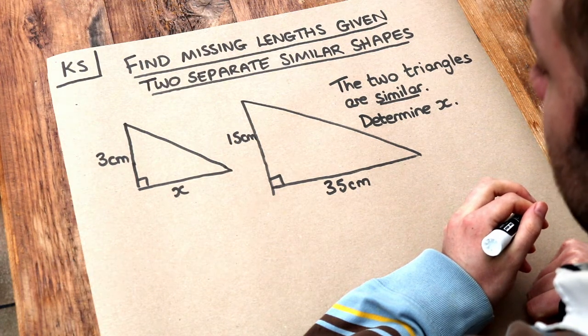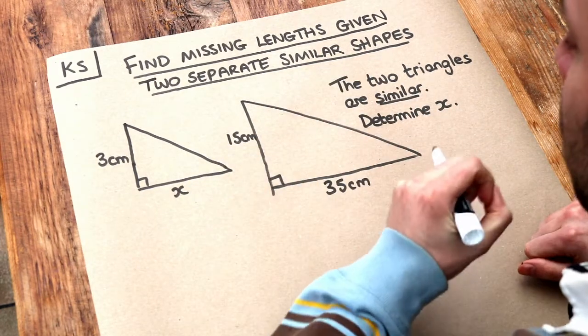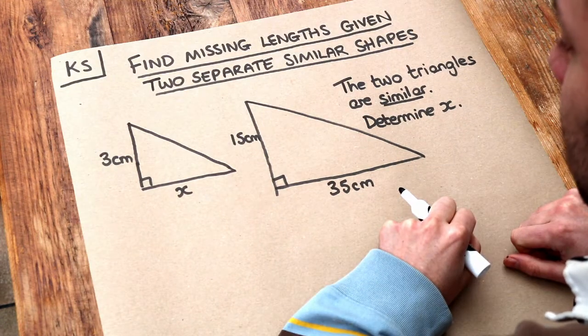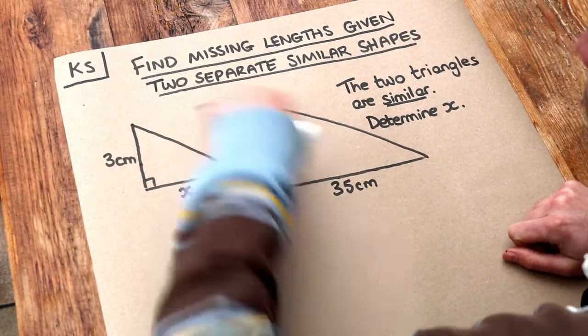Now what do I mean by similar shapes? I don't just mean similar as in two things are kind of the same. When we use the word similar in maths, it has a very specific meaning: your two shapes effectively have the same shape but might be of different sizes, so all the lengths are in the same proportion.